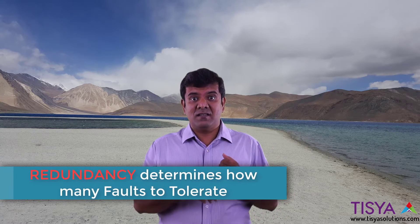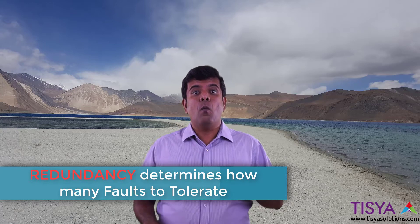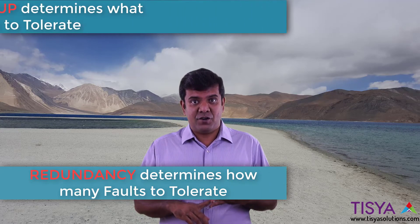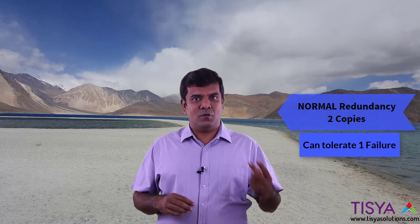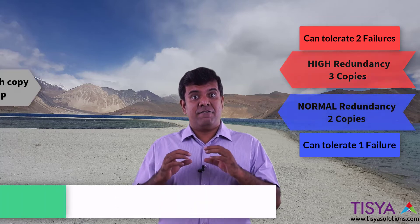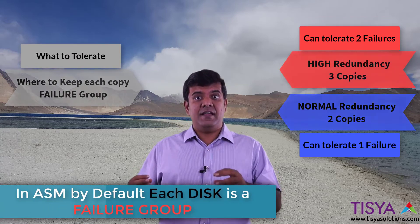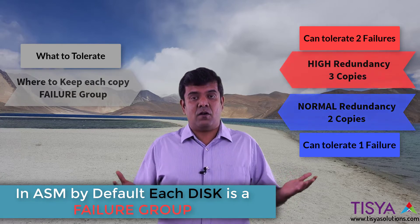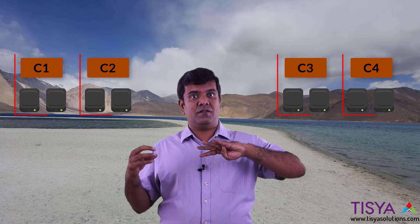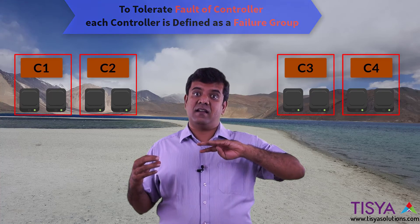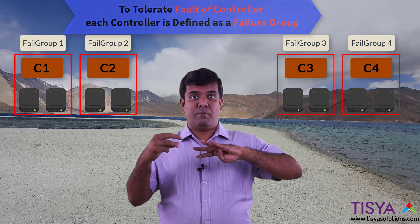With normal redundancy, even with 10 storage servers each being a failure group, you can tolerate only one storage server failing. What you need to keep in mind is: the redundancy level determines how many faults you can tolerate, and the fail group configuration determines what type of fault you want to tolerate. Normal redundancy results in two copies, high redundancy results in three copies. Fail group specification tells where each copy of a stripe will be kept — by default on different disks, but you can raise it to the controller level, where each bunch of disks belonging to a particular controller is defined as a fail group.